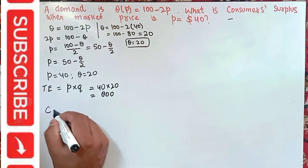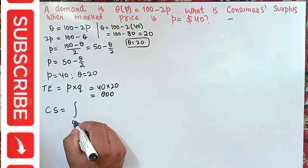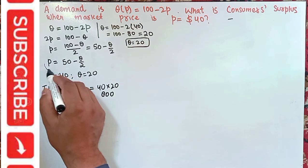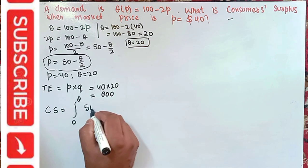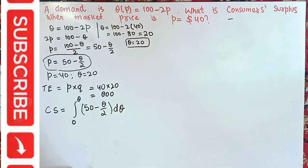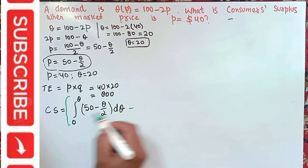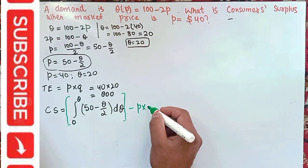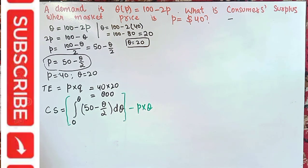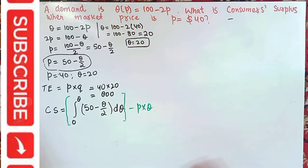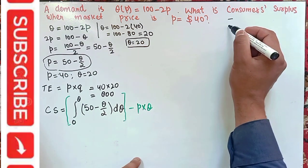The formula for consumer surplus is the definite integral from 0 to the equilibrium quantity of the inverse demand function, minus the total expenditure. That is: CS = integral from 0 to 20 of (50 minus q/2) dq, minus 800. We subtract the total expenditure so it is not confused with the integral term.